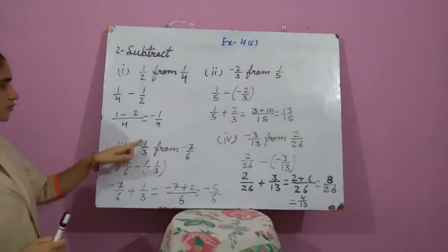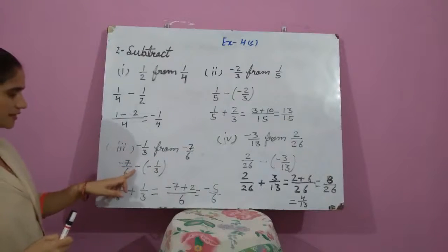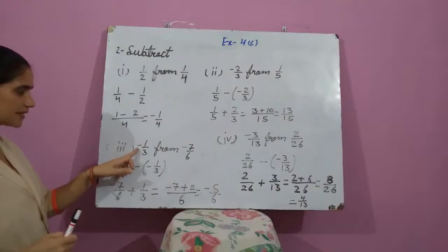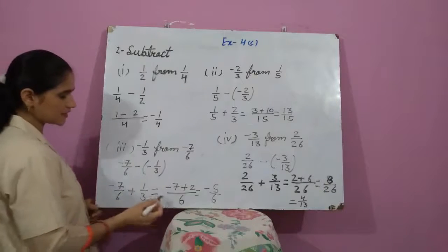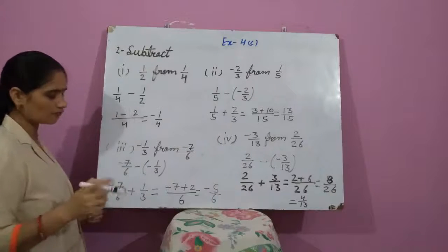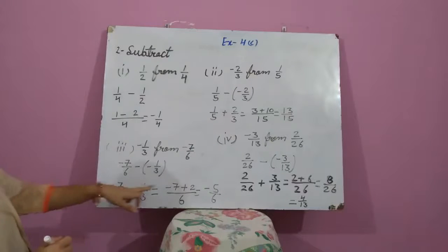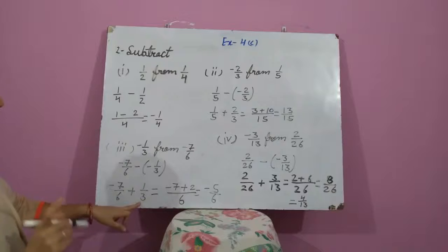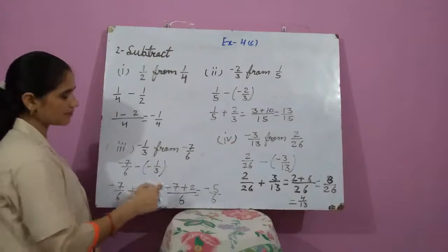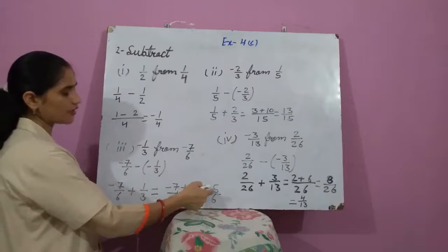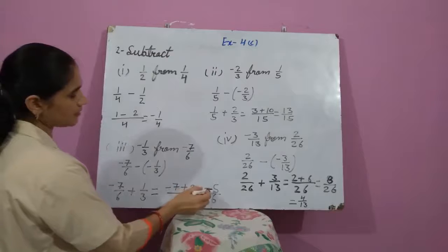Come to the third part: minus 1 upon 3 from minus 7 upon 6. We compute minus 7 upon 6 minus (minus 1 upon 3); minus minus becomes plus. The LCM of 6 and 3 is 6. Then 6 divided by 6 is 1, and 1 multiplied by 7 gives 7; 6 divided by 3 is 2, and 2 multiplied by 1 is 2. So minus 7 plus 2, because 7 is greater than 2, gives minus 5 upon 6.